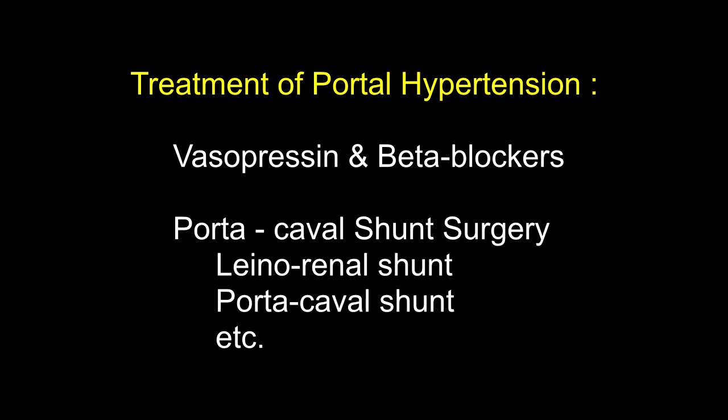How do you treat portal hypertension? Medical treatment includes vasopressin and beta blockers, but that is a temporary measure to control hematemesis in emergency. Definitive treatment is surgical — portacaval shunt surgery. The most common shunt is the lienorenal shunt, that is splenic vein anastomosed to the left renal vein. Other shunts are portacaval shunt — portal vein to inferior vena cava — and mesocaval shunt — superior mesenteric vein to inferior vena cava.